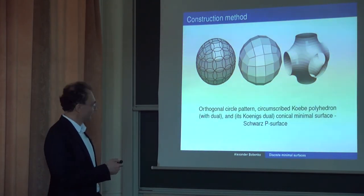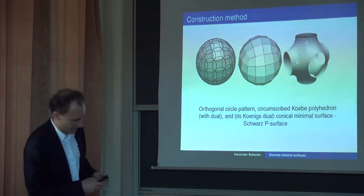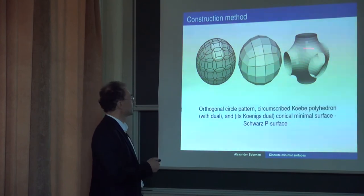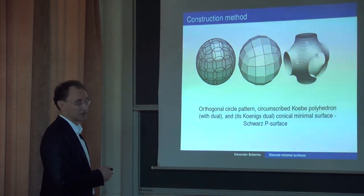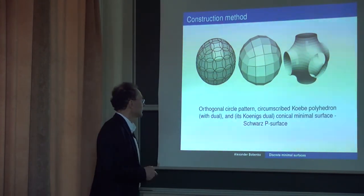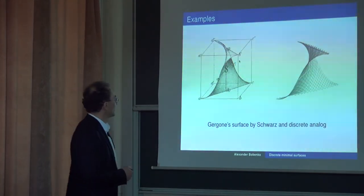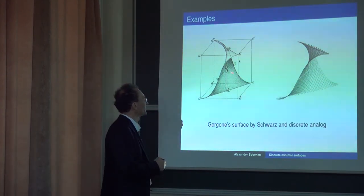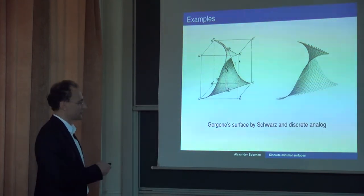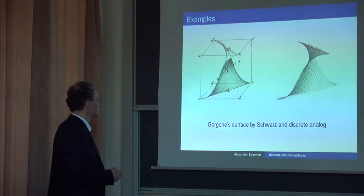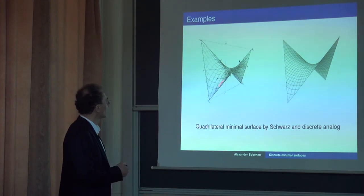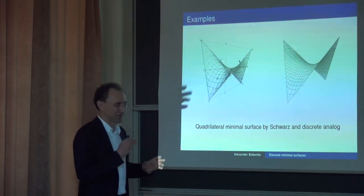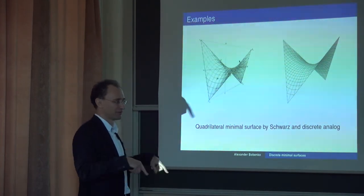Now the construction method — let me show a couple of examples. That's an orthogonal circle pattern constructed variationally, that's the corresponding Kerber polyhedron with its dual, and that's the dualization according to Koenigs nets. That's a discrete analog of a conical minimal surface which is a Schwarz P surface. Here we compare classical drawings from the book by Schwarz with the continuous minimal surface and our discrete minimal surface — they look very similar, and there is a theorem about convergence.